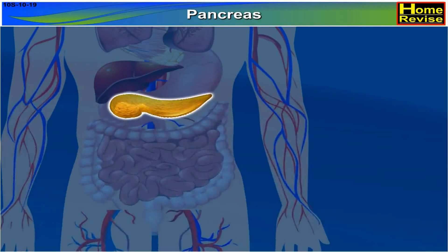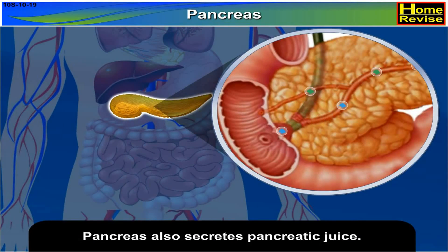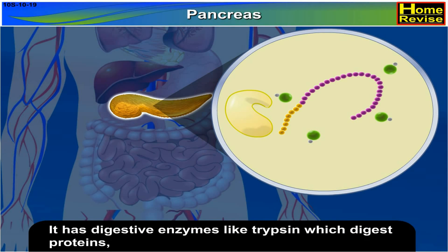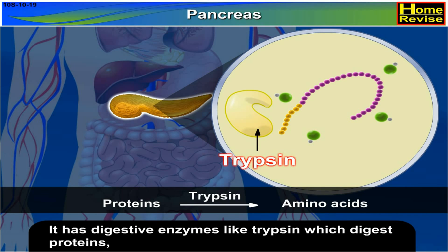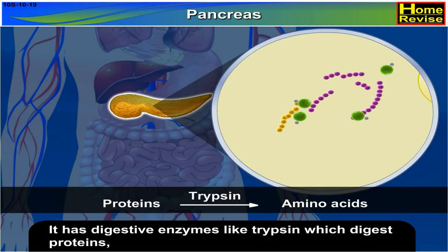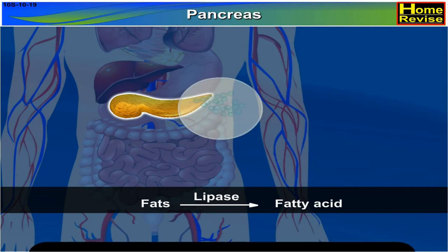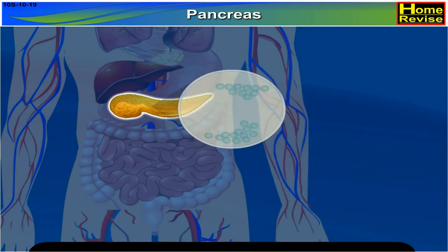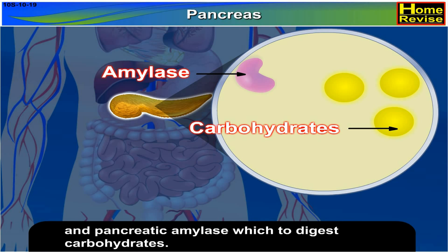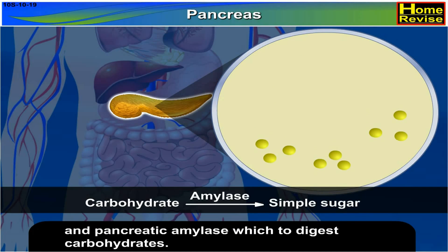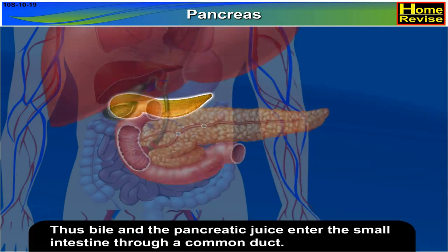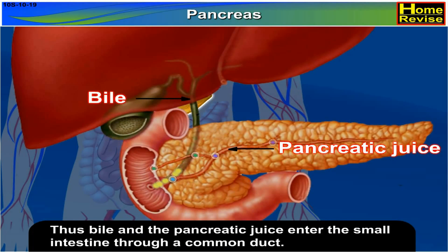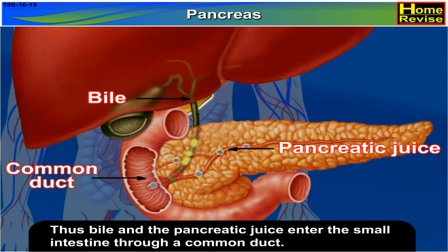The pancreas secretes pancreatic juice. It contains digestive enzymes like trypsin, which digests proteins; lipase, which breaks down fats; and pancreatic amylase, which digests carbohydrates. Thus, bile and pancreatic juice enter the small intestine through a common duct.